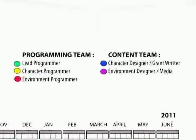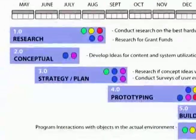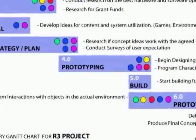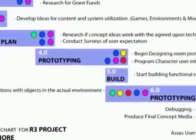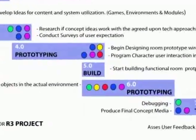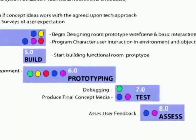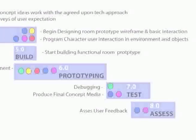The R3 project will consist of two teams and five people in total. The team will consist of three programmers: a lead programmer, a character programmer, and an environments programmer. There will be another team of content developers — one is the character designer and the other is the environment designer. The R3 project can be broken down to the following components: a conceptual component, a design component, programming, phase one testing of software, phase two testing of hardware, construction, and phase three testing the usability.